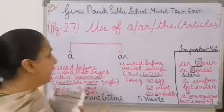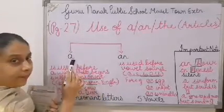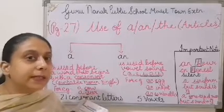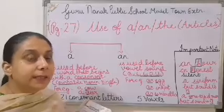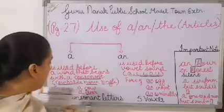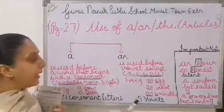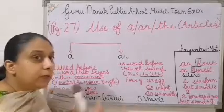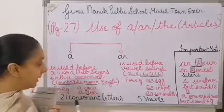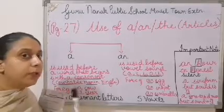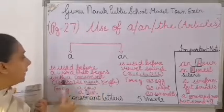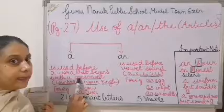So listen very, very carefully. First is where to use A. Now before starting this, you all know that in the English language we have 26 alphabets. From those 26, 21 are consonant letters and 5 are the vowel sounds. The vowel sounds you all know — we have done these in class 1: A, E, I, O, U. The rest remaining are the consonant letters. So where to use A first? A is used before a word that begins with a consonant.